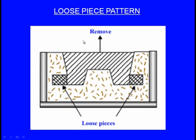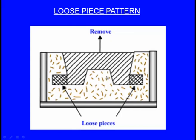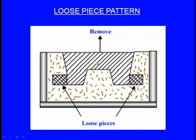Next, the loose piece pattern. The geometry of this casting has features that obstruct withdrawal. We could use a single piece pattern, but after compacting sand in the drag box and making it upside down, portions of the pattern obstruct its removal. In such a case, we use the loose piece pattern. The pattern has separate loose pieces on each side. Keeping these loose pieces close to the pattern, we complete the moulding process.